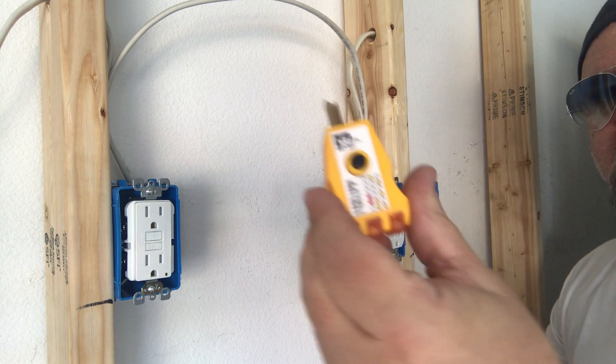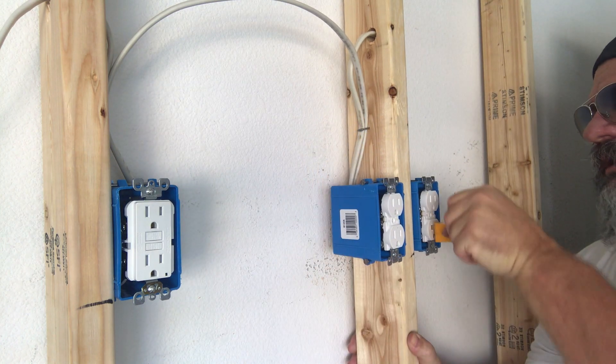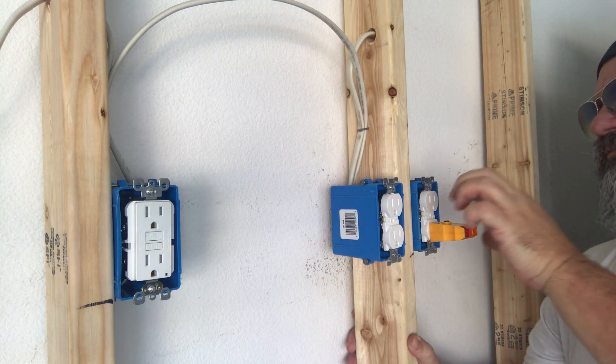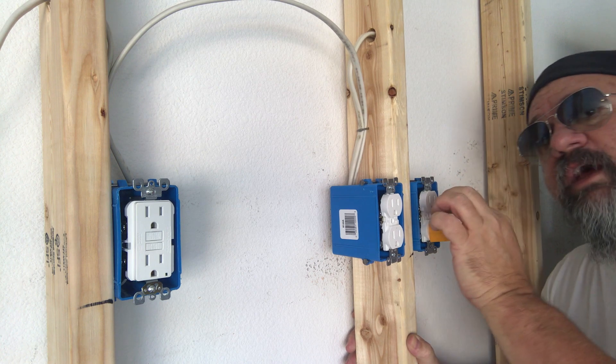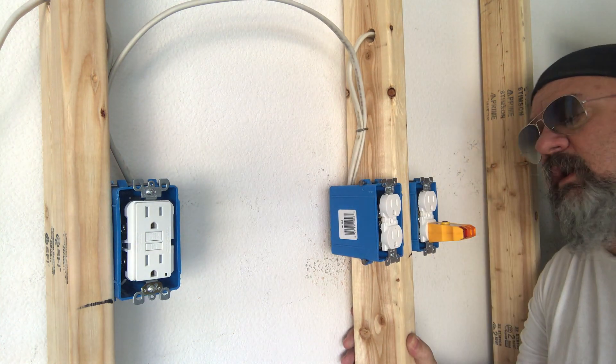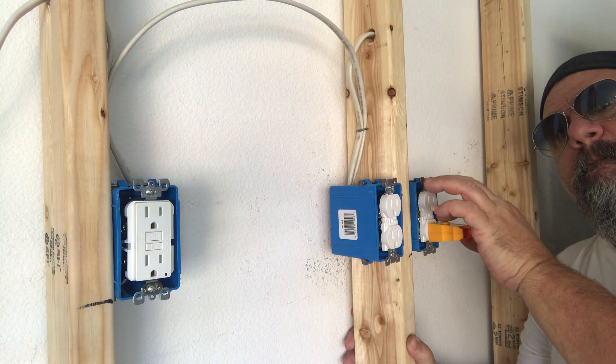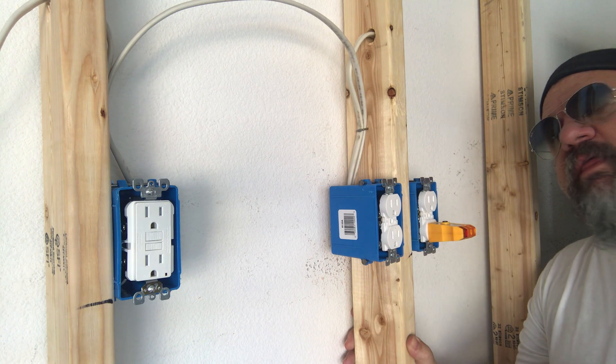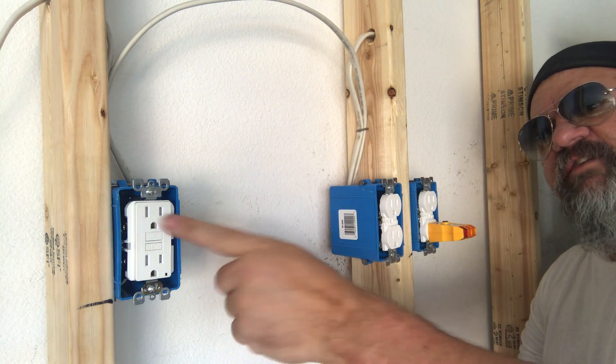Now how do we test it to know if we're GFI protected? Well there's a little test button right here on top of this. And it trips it to ground, the neutral to the ground, not hot to ground. If it was hot to ground you'd have a big arc. So let's test it. Since that shut that GFI off, everything in that circuit is now de-energized.